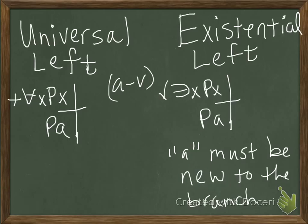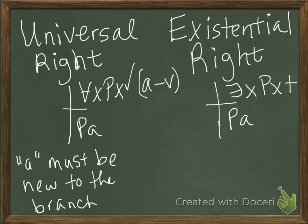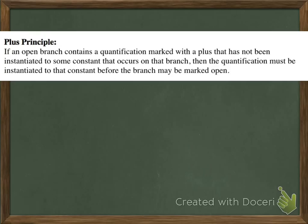So now there's a little thing we need to discuss. There are these plus rules—universal right and existential left. I've said that we can instantiate these formulas more than once, which is why we need a plus next to these steps rather than a check. But how many times will we want or need to instantiate them, and how do we know when we should? Pospisil has an answer for this, something he calls the plus principle. The plus principle says: if an open branch contains a quantification marked with a plus that has not been instantiated to some constant that occurs on that branch, then the quantification must be instantiated to that constant before the branch may be marked open.